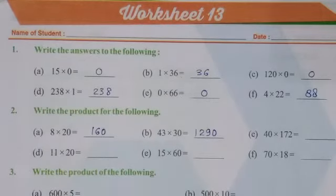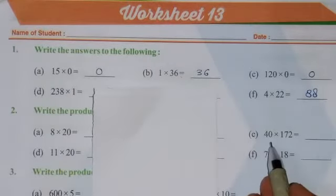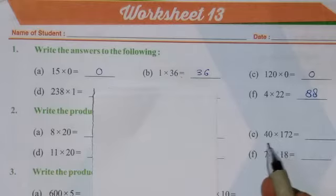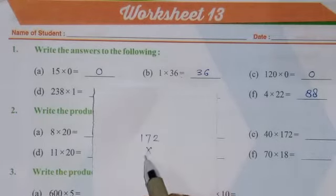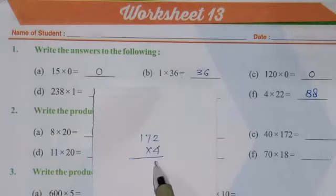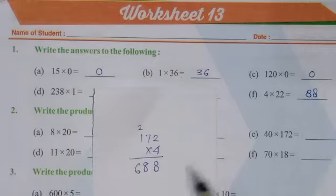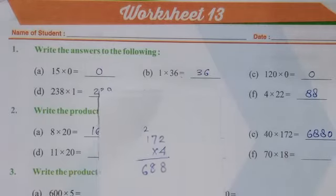So in this way we have to multiply these numbers. Similarly you can see, in the next question, 40 multiplied by 172. So we will multiply 172 by 4. What will be the answer? 4 times 2 is 8, 4 times 7 is 28, so 8 carry over 2. 4 times 1 is 4, 4 and 2 is 6. So we will write here 688, and this 0 will be repeated here. So this is the actual answer.